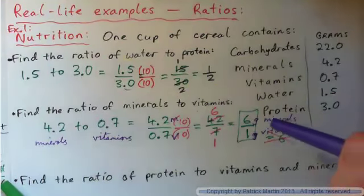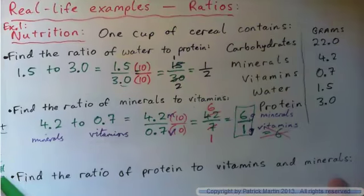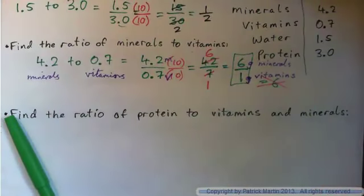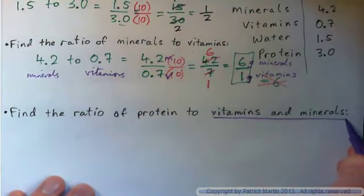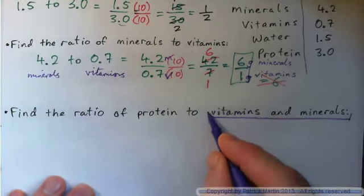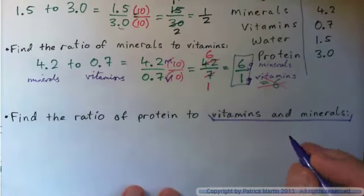You could say for every 6 milligrams there's 1 milligram of vitamins, but there's 6 times as many minerals as vitamins is the idea. So find the ratio of protein to vitamins and minerals. Look at that, vitamins and minerals.